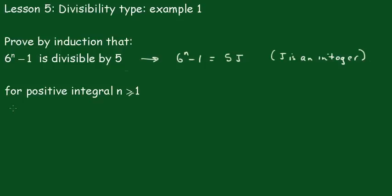So again, for n equals 1, the left hand side of this is going to be equal to 6 minus 1, which equals 5. And of course, that's equal to 5j, where j equals 1.